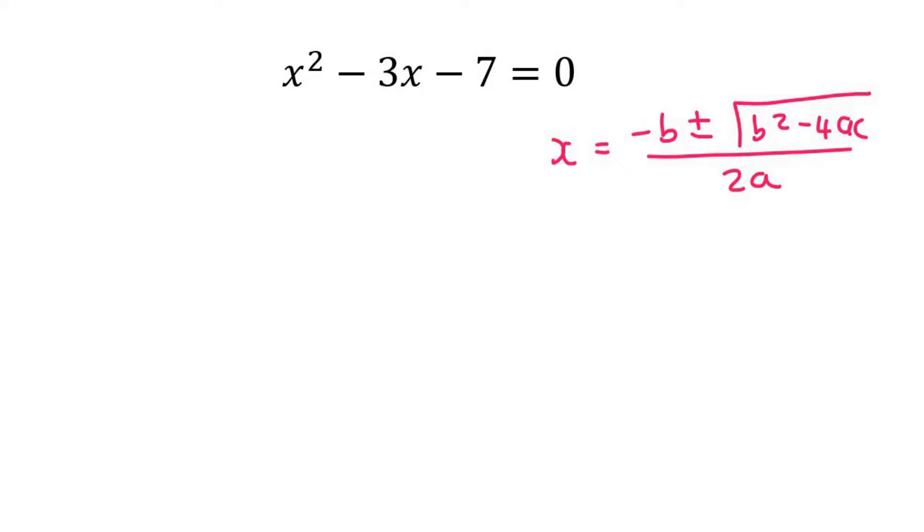Let me quickly show you how it works. You always want the one side to be equal to zero. Once that is true, then the number that is in front of x squared, which is a one in this case, that'll always be a, so a is always in front of x squared.